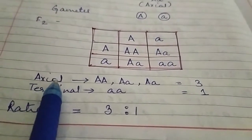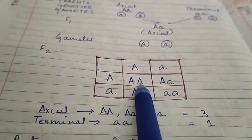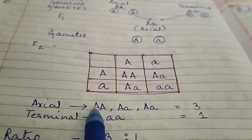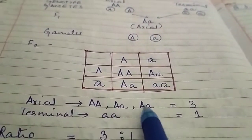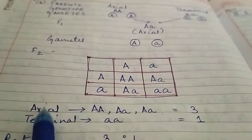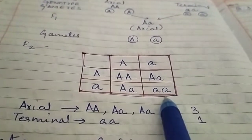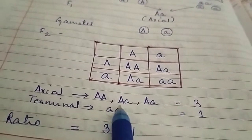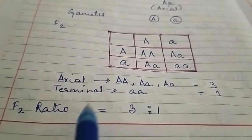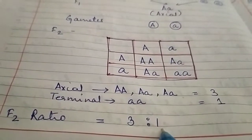The results: capital A capital A is axial. Capital A small a, as seen in F1, is also axial in heterozygous condition. All three with dominant allele present are axial. Only small a small a — one individual — is terminal, because recessive features are expressed only in homozygous conditions. So the F2 ratio: out of four plants, three are axial and one is terminal. The ratio is 3:1.